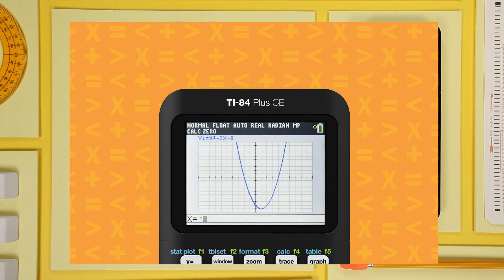In this case, let's use negative 3 for the left boundary and negative 1 for the right boundary. Make a guess close to where you think the zero is. In this case, negative 2.